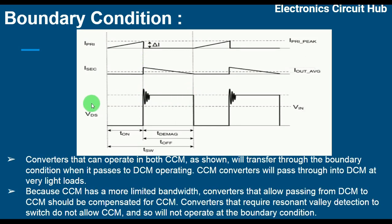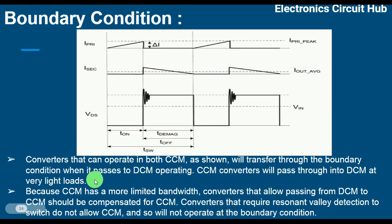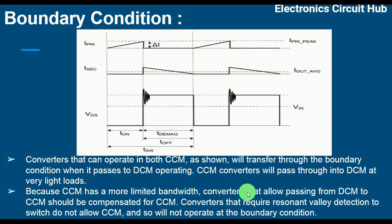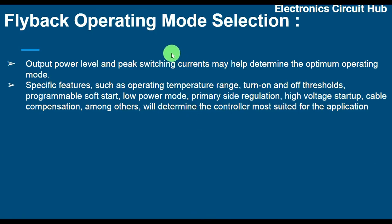Converters that can operate in both CCM and DCM will transfer through the boundary condition when passing between modes. A CCM converter will pass into DCM at very light load or no load. At full load, the flyback converter will operate in CCM (continuous conduction mode). CCM has a more limited bandwidth, so converters passing from DCM to CCM should be compensated for CCM. Importantly, converters that require resonant valley detection do not allow CCM and will not operate in boundary condition mode.